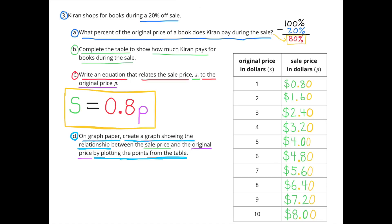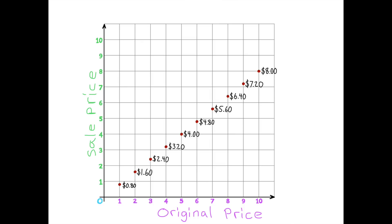D. On graph paper, create a graph showing the relationship between the sale price and the original price by plotting the points from the table. I have an axis across the bottom showing the original price, starting with 0 in the bottom left-hand corner, where each line to the right represents $1.00. The vertical side is set up the same way, starting from 0 and moving up, each line representing $1.00. The left side is labeled the sale price, so vertical movement represents sale price and horizontal movement represents original price.